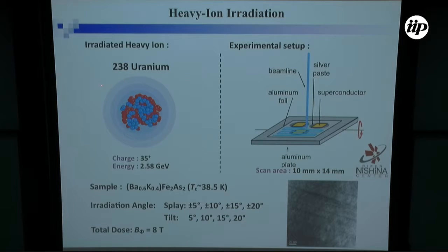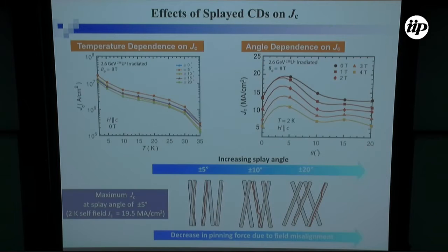Here we use mainly first, we use uranium. This is a rather heavy atom, and the energy is also very high, 2.6 GeV. The TEM observation clearly shows creation of columnar defects like this. The diameter here is roughly the same as in the case of gold ions. It's roughly five nanometers. We introduce several splay angles and also compare in the tilt case. We tried many doses, but mainly show you eight Tesla data.